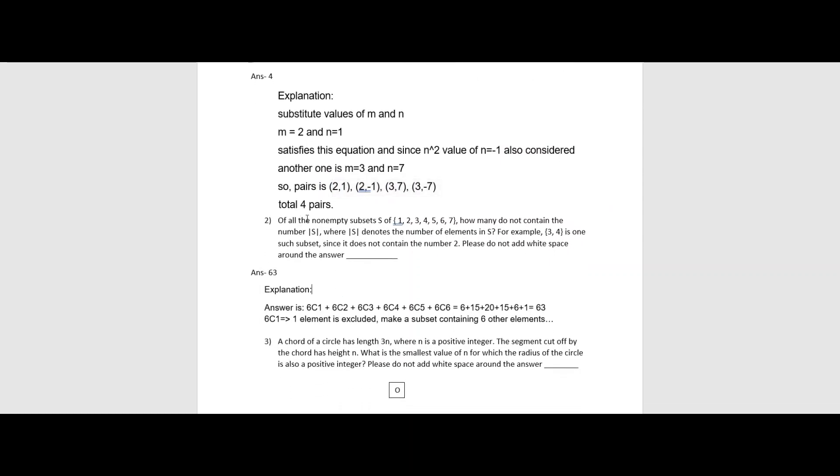Moving on to the next question. Of all the non-empty subsets S of 7 elements that is 1 to 7, how many do not contain the number S where S denotes number of elements in S. For example 3,4 is 1 such subset since it do not contain the number 2. So here this is from set theory which is quite interesting. You will have to solve this by the formula of permutation and combination. Here we will require only the formula for combination. That is as you can see that there we need to find subsets and eliminating one element each.